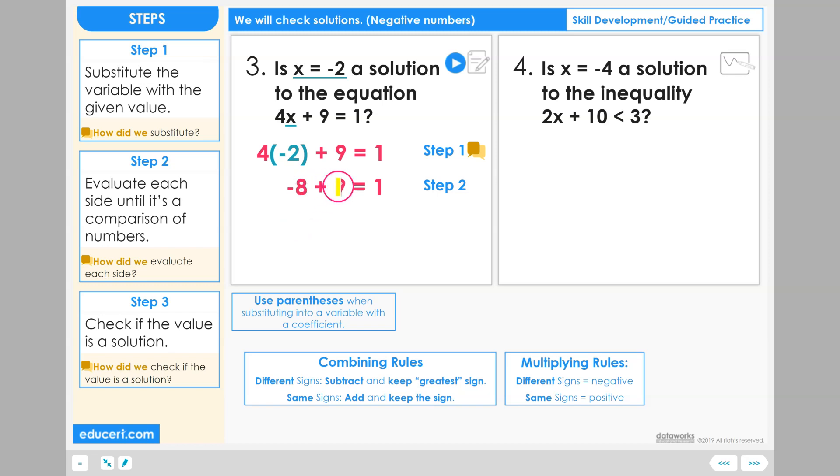Negative 8 plus 9, or a negative 8 and a positive 9, we'll combine using different sign rules. We will subtract 9 minus 8 equals 1, and we will keep the sign of the greatest, which is the positive 9. And so now we know that this will be a positive 1. And on the other side, the right-hand side, we never had to evaluate any calculations because it was always just a 1. We just brought it down each time.